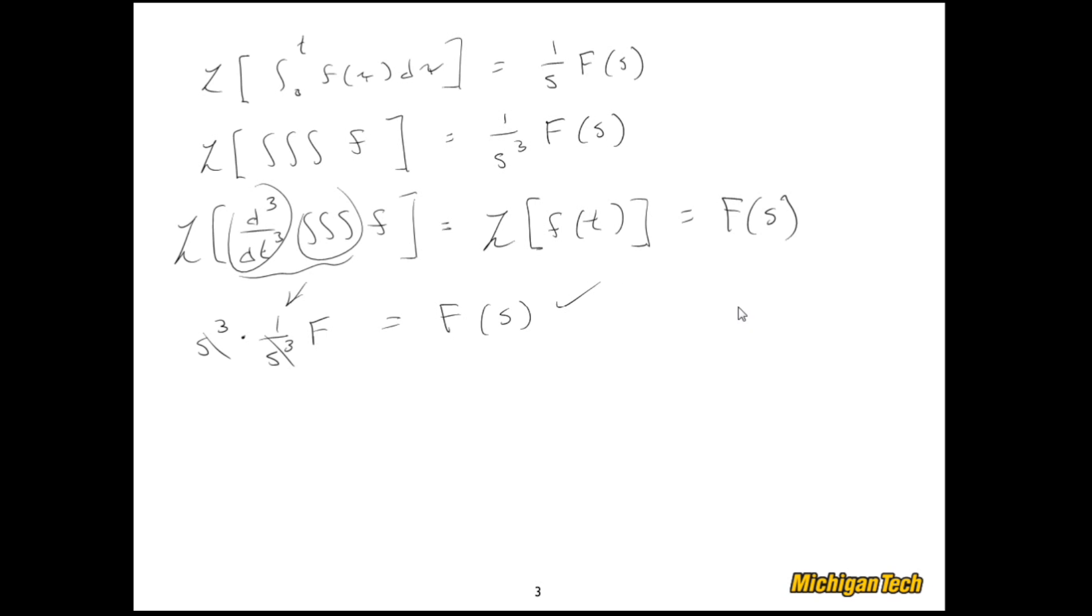Well, now let's do just one more example. 5x double dot plus 3x plus 4 integral of x equals 2u. And that's of course in the time domain. So if I take the Laplace transform of the whole thing, like so, what I'll get is 5s squared capital X minus sx zero, that's a lowercase x, this is an uppercase X, minus x dot zero, plus 3 capital X from that, plus 4 over s capital X from here equals 2U.